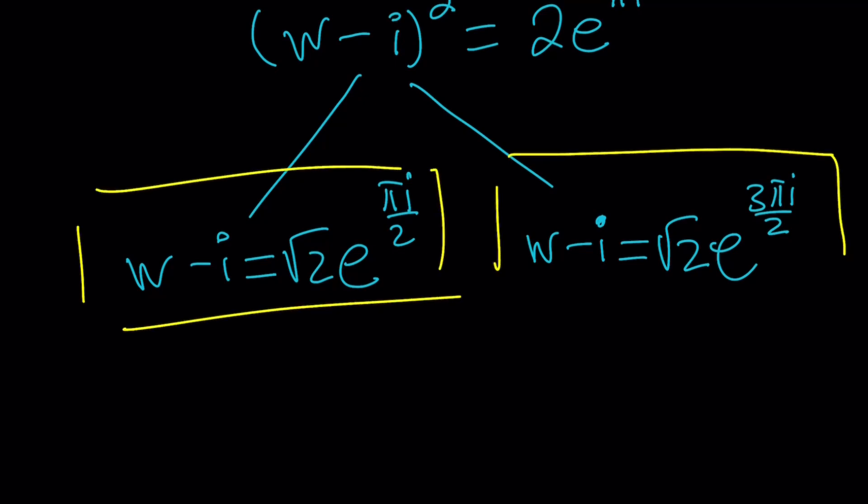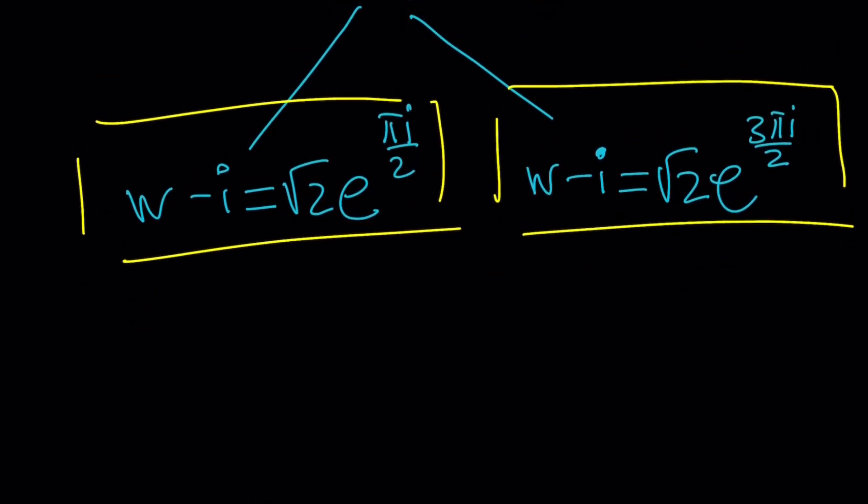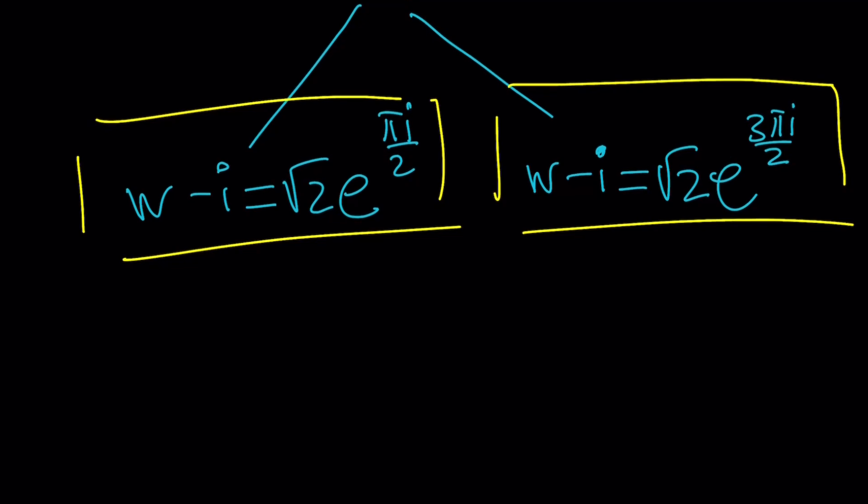And not only that, we have to kind of go somewhere from there. What is this number? What is pi i over 2? e to the power pi i over 2. So the argument here is pi over 2, and the modulus is root 2. So you're basically looking at root 2 times i. This is root 2i. Make sense?